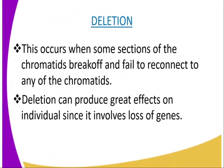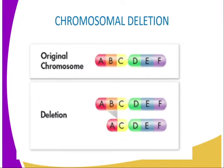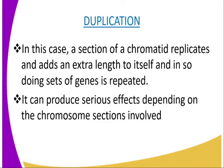Deletion can produce great effects on an individual since it involves loss of genes. Both the structure and the development of the individual can be closely interfered with. Indeed, most deletions are lethal since the offspring may lose genes responsible for the synthesis of some vital protein molecule. As you can see from our diagrammatic presentation, the original chromosome had gene B, but after deletion, B has been lost.